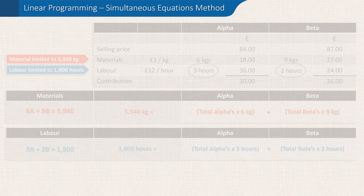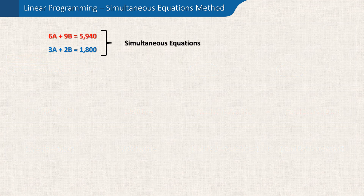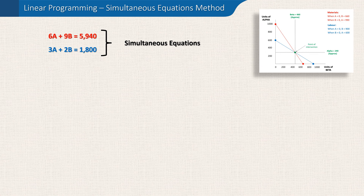We now have simultaneous equations — this is just mathematical jargon meaning we have two equations happening at the same time. There'll be values for both A and B that work for, or are common to, both equations. When found, these values will provide the optimal production plan for alpha and beta needed to maximise contribution — that is the exact point of intersection we established on our graph in the previous video.